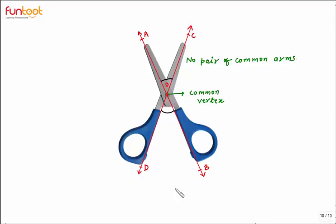And two pairs of their arms form a straight line. Arm CO and OD form a straight line — this is the first pair. Arm AO and OB also form a straight line — this is the second pair. Such a pair of opposite angles is called vertically opposite angles. We can easily see these angles are opposite to each other, which is why they are called vertically opposite angles.